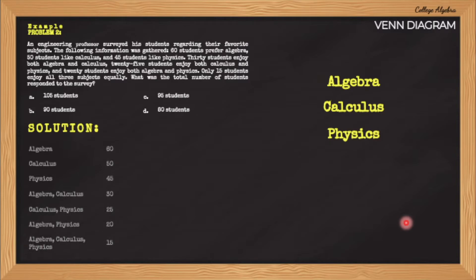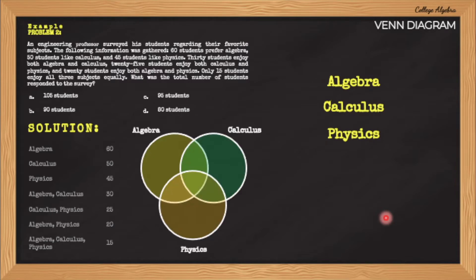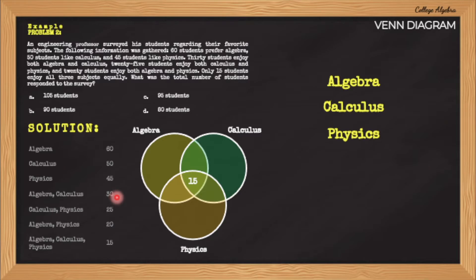I have tabulated the given values in the problem for easy referencing. To solve this, we need to construct a Venn Diagram that has three overlapping circles representing each set. Starting in the centermost part, or the intersection of the three sets, the value is 15 based on the problem. This represents the 15 students that enjoy all three subjects. From here, we need to work outwards. Next are the intersections between two sets. On the intersection between algebra and calculus, the problem stated that there are 30 students who enjoy both subjects. Take note that this 30 already includes the 15 who enjoy all three subjects. Therefore, the remaining 15 only enjoy both algebra and calculus.